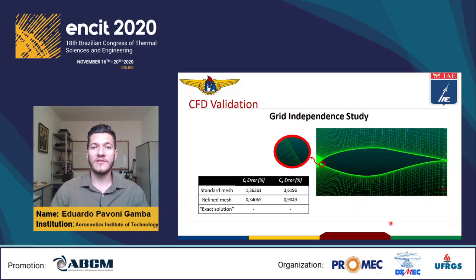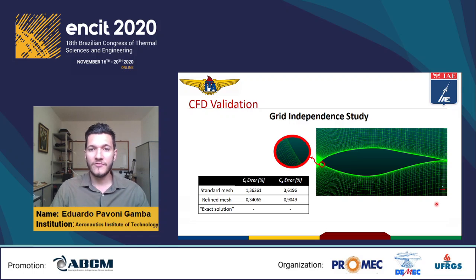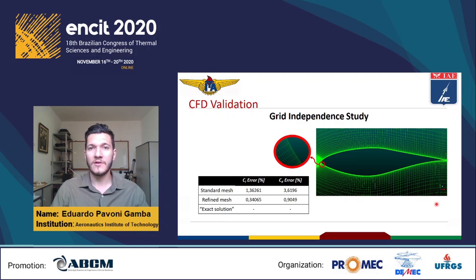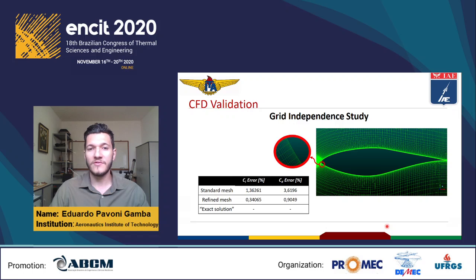We also investigated the refinement level through the grid-independency study. Starting from the standard mesh, we refined it with double the number of points. Based on these two solutions, we estimated a hypothetical exact solution. This table shows that the standard mesh already has sufficient precision without needing an additional refinement level.